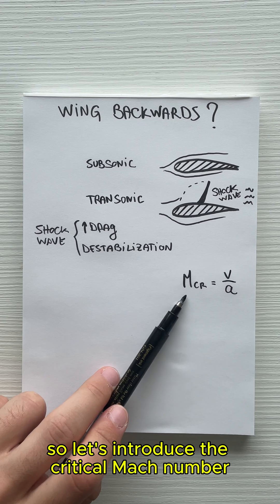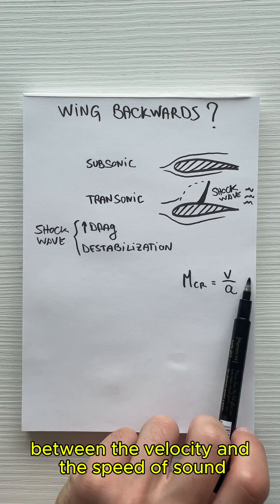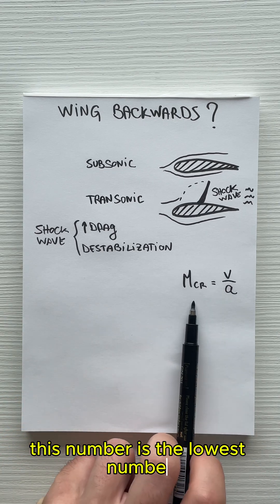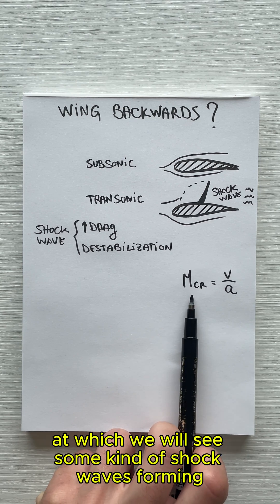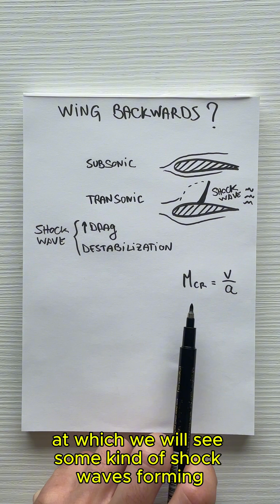Let's introduce the critical Mach number, which is the ratio between the velocity and the speed of sound. This number is the lowest number at which we will see some kind of shockwaves forming around the wing.